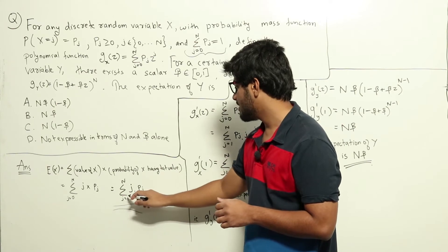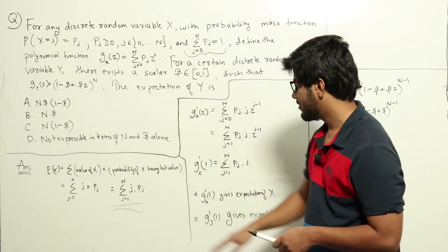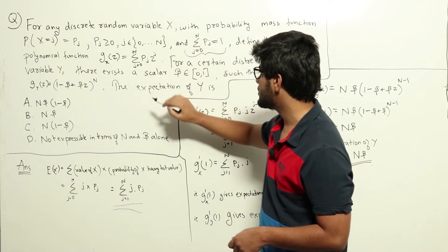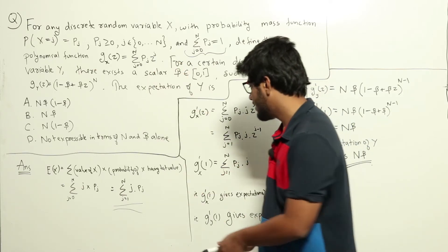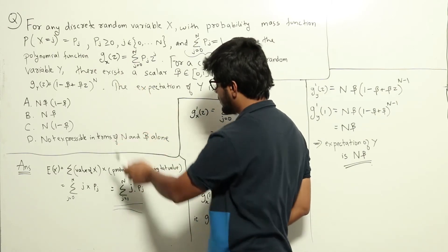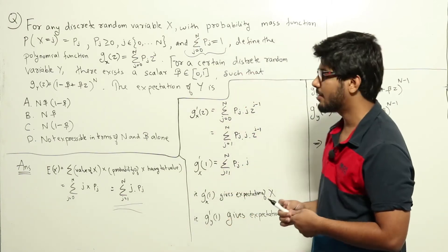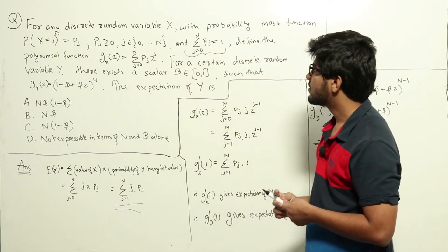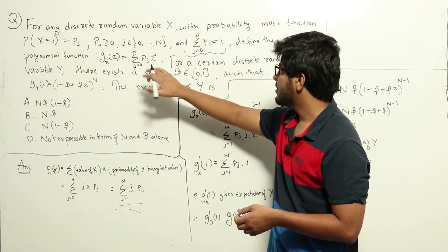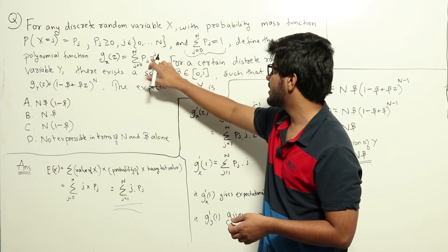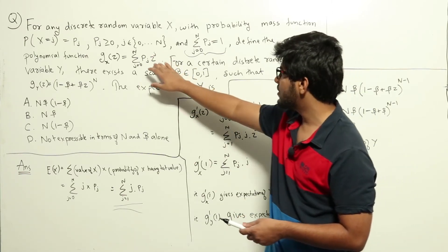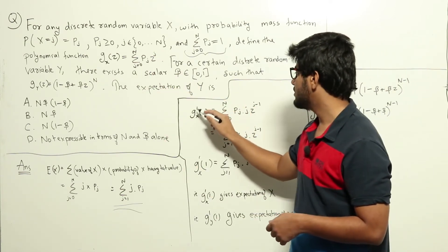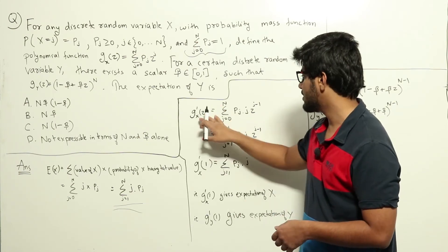Expectation of x is sigma from j=1 to n of j * p(j). Can we get this from g_x(z) = sigma from j=0 to n of p(j) * z^j? We have p(j) in both, but we need the j term. Since z^j appears, if we take the derivative with respect to z, we get j * z^(j-1), which brings j outside.